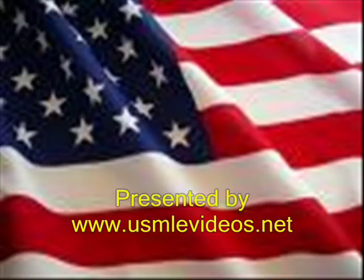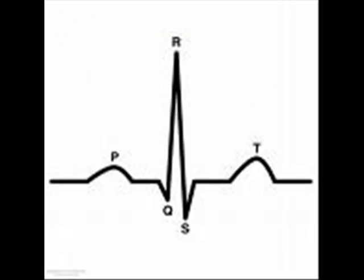Good evening, let us review some of the most important EKGs today. EKG is mainly denoted by five important waves: P, Q, R, S, and T. P wave represents atrial depolarization, QRS represents ventricular depolarization, and T wave represents ventricular repolarization.